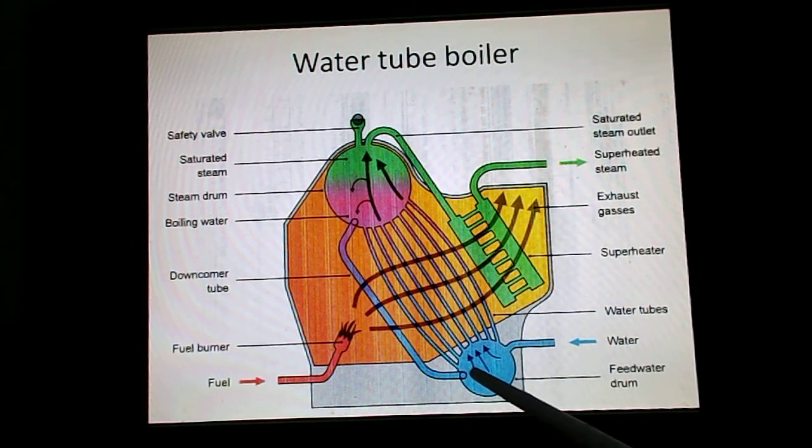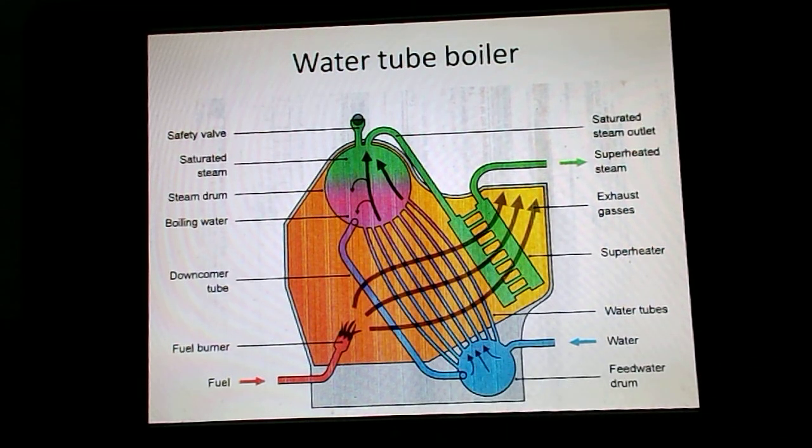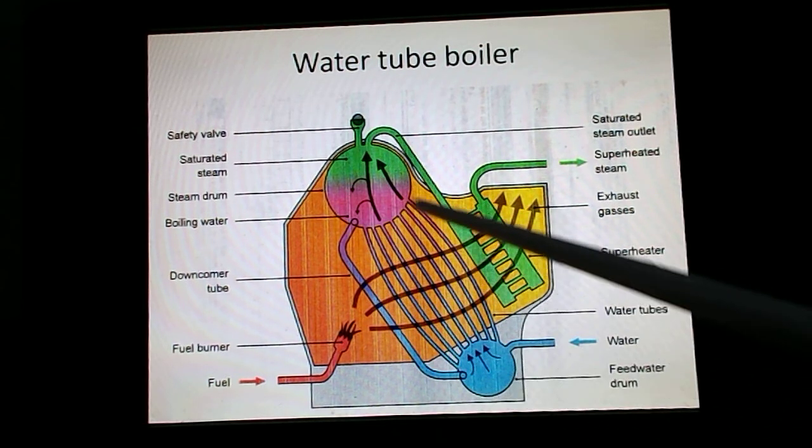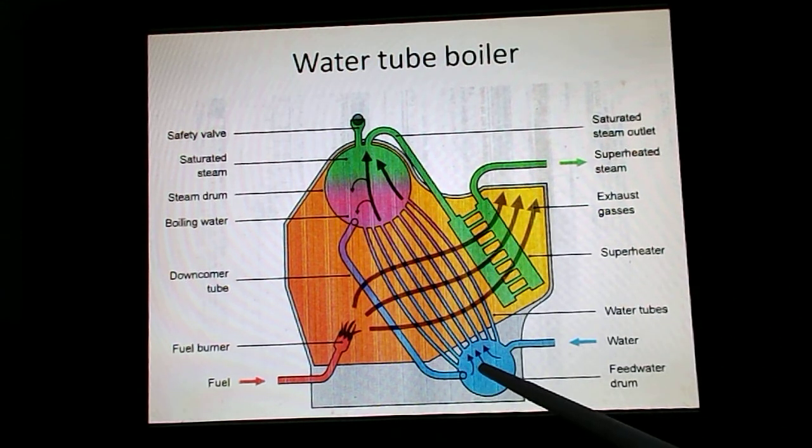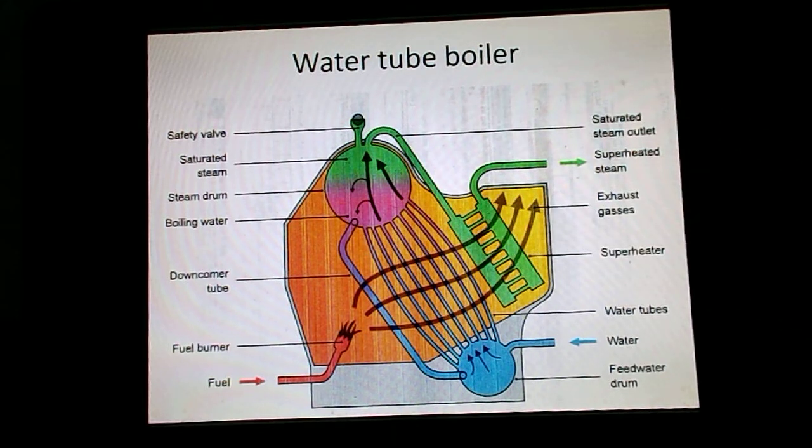There is a feed water drum and there is a steam drum. Both are interconnected with the help of bunch of tubes. There is one down comer tube and then there is a bunch of riser tubes. You can see that the water is recirculating through these tubes. Through the down comer, the water is coming to the feed water drum and then with the help of risers, it is rising to the steam drum.